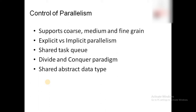Control of parallelism is used to determine what level of parallelism is being achieved. It supports coarse, medium, and fine-grain granularity — granularity being the size of the modules executed concurrently, with coarse being largest, medium smaller, and fine the smallest. This feature also determines explicit versus implicit parallelism, shared task queues, divide-and-conquer paradigm, and abstract data types.